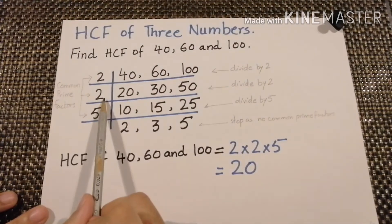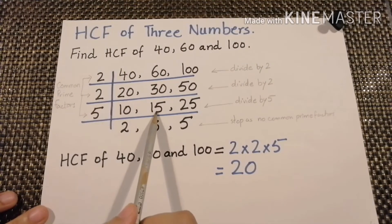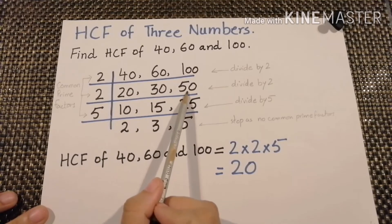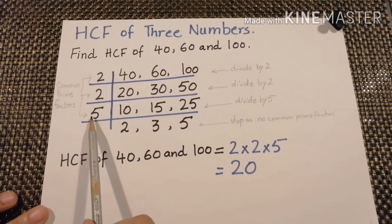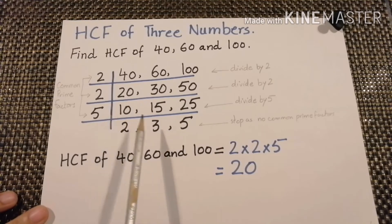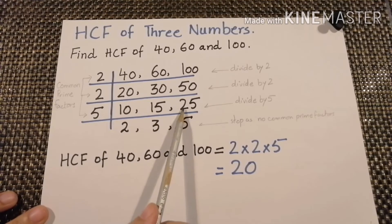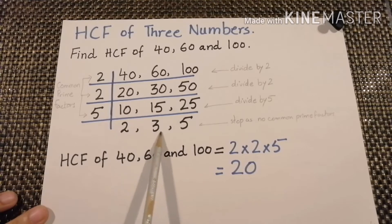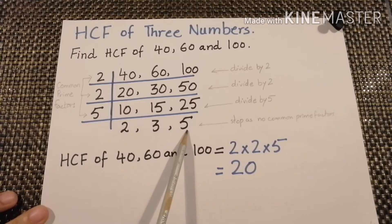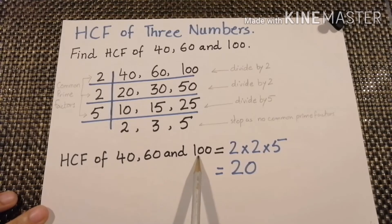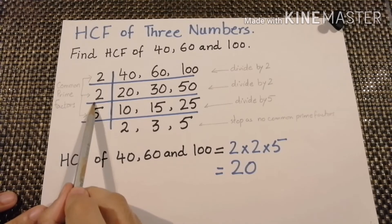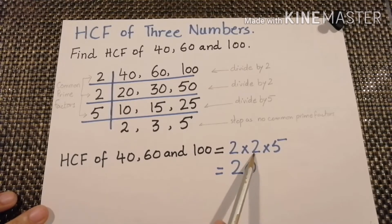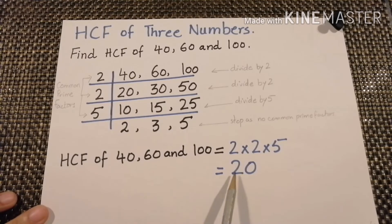Again we will divide by 2. 2 times 10 is 20, 2 times 15 is 30, and 2 times 25 is 50. Now 10, 15, and 25 are divided by the common prime factor 5. 5 times 2 is 10, 5 times 3 is 15, and 5 times 5 is 25. Now we stop dividing as there is no common prime factor. The HCF of 40, 60, and 100 will be 2 multiplied by 2 multiplied by 5. 2 times 2 is 4, and 4 times 5 is 20. So the highest common factor of 40, 60, and 100 is 20.